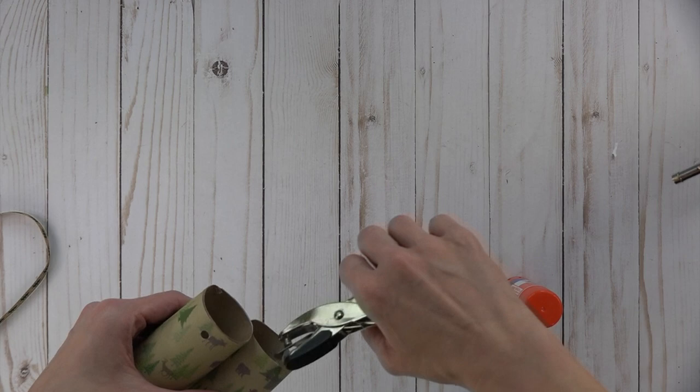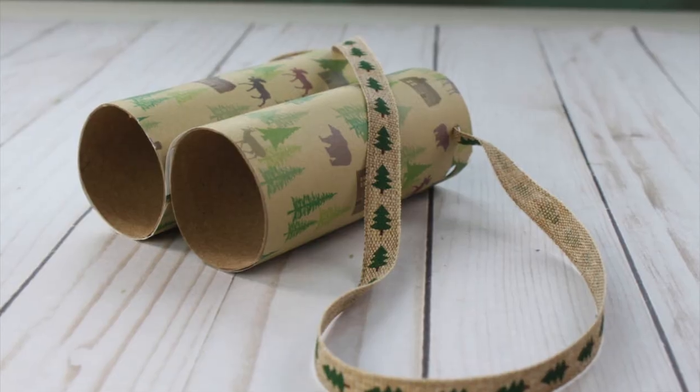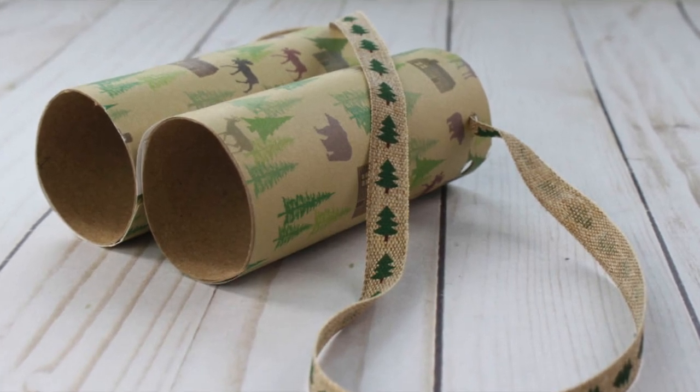Then you're going to hole punch either side. Get a little bit of the glue, whatever kind you use, again I use super glue, and glue the middle together. Knot a ribbon through each hole and you're done!